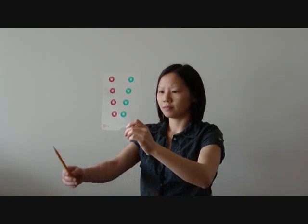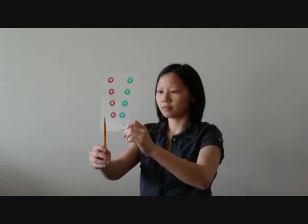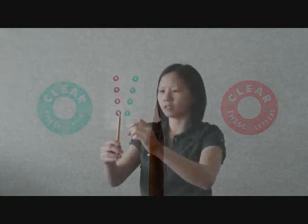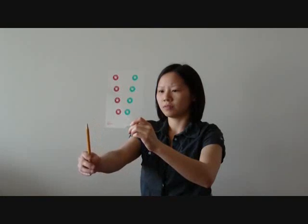With the other hand, hold the pencil behind the card at arm's length so that it is positioned between the two lower circles. Look at the pencil tip and keep it single while moving it away from the card.